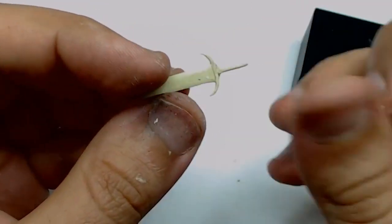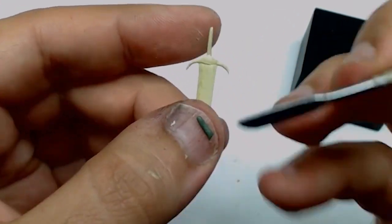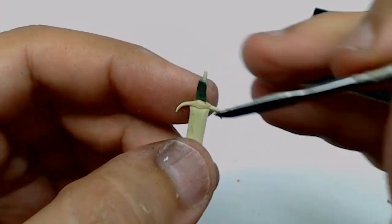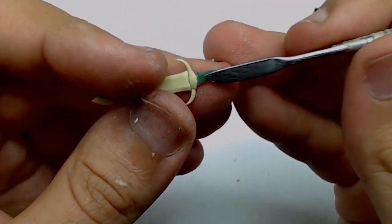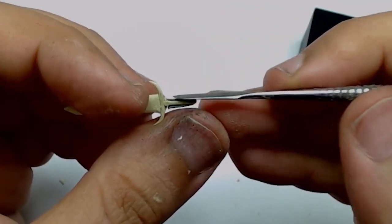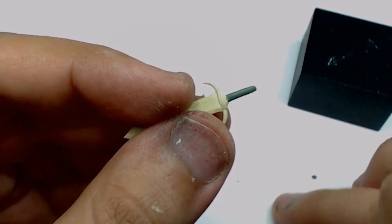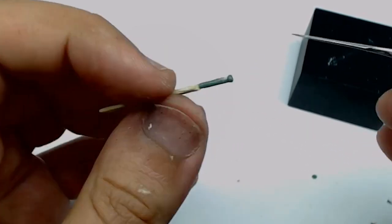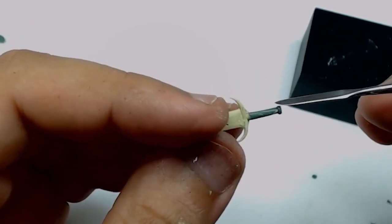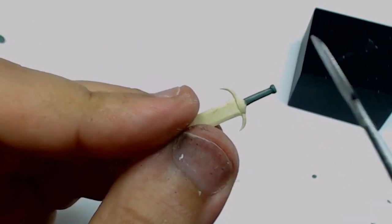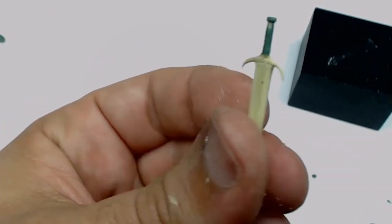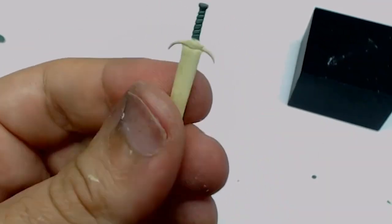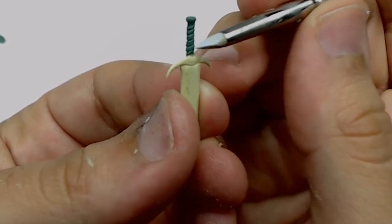After that, I'm going to glue the guard and the handle because they were removed during the process. I'm going to put green stuff all around the handle to create some kind of tissue or bandage. I put one more element to finish the handle, and then I make some lines to simulate the tissue wrapping.